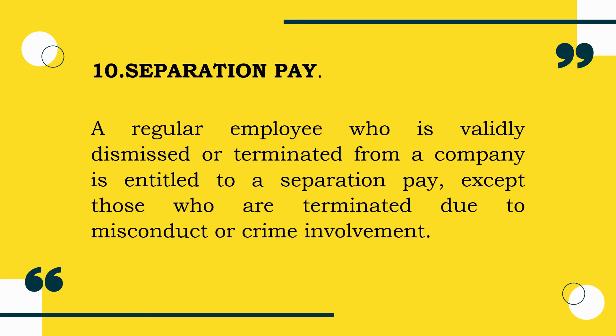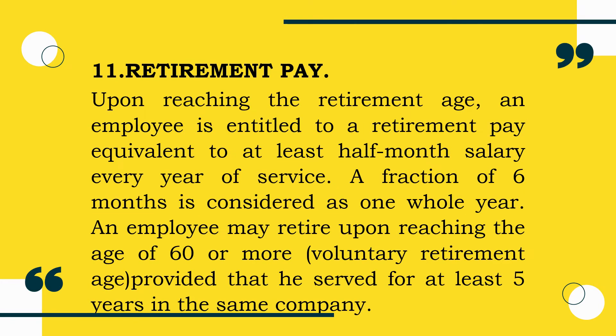Tenth is Separation Pay. A regular employee who is validly dismissed or terminated from a company is entitled to separation pay, except those terminated due to misconduct or crime involvement. Eleventh is Retirement Pay. Upon reaching retirement age, an employee is entitled to retirement pay equivalent to at least half-month salary for every year of service. A fraction of six months is considered one whole year. An employee may retire at age 60 or more, provided they served for at least five years in the same company.